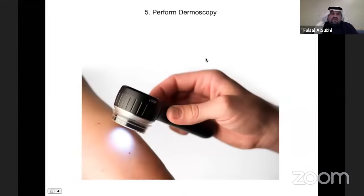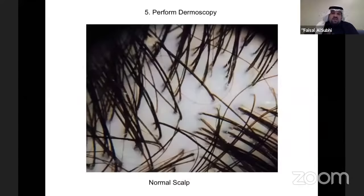The fifth step is dermoscopy, which is really important — a handheld device with magnification and polarized light. This is how a normal scalp looks under dermoscopy. You should do dermoscopy for all hair loss patients, because it provides a lot of information, as we'll see when we go through the cases.